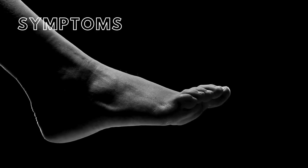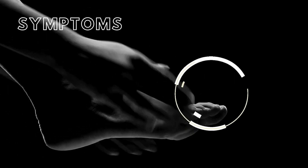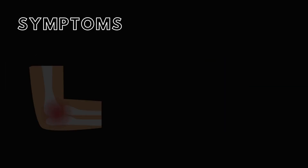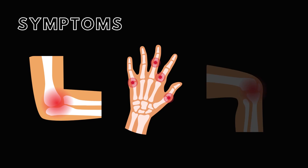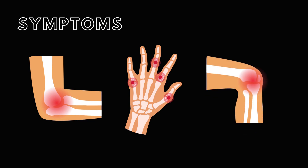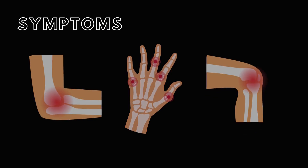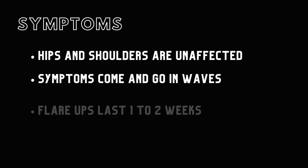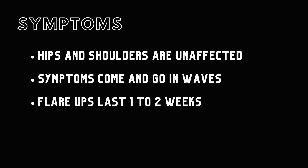Initially, gout tends to affect one joint, almost always the big toe's base. But as time goes on, your elbows, knuckles, and knees may also show similar signs of pain. Surprisingly, hips and shoulders are usually unaffected. Symptoms come and go in waves, with flare-ups lasting one to two weeks, followed by periods of remission.